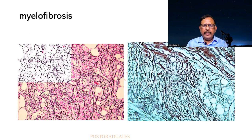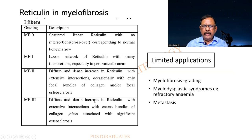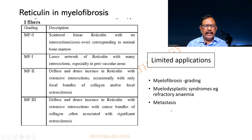Yet another one: put in a needle, you get a dry tap — the diagnosis of myelofibrosis. I find there is an increase in the fibrous tissue. Try putting a needle through cotton — you cannot penetrate it easily, and that is exactly what happens in myelofibrosis. There is an increased amount of reticulin fibers and a scarce amount of hematopoietic cells. There is a grading of reticulin in myelofibrosis, and there are some limitations in the grading. Sometimes it can be positive for myelodysplastic syndrome, and it can be used for the diagnosis of metastasis also.